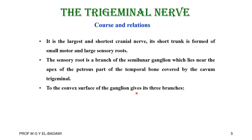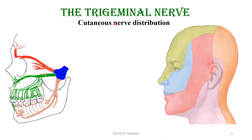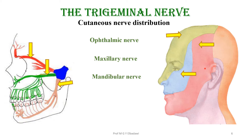The convex surface of the ganglion gives three branches: the ophthalmic, the maxillary, and the mandibular, which is joined by the motor root. For cutaneous distribution: the ophthalmic supplies the upper area of the face, the maxillary supplies the middle part, and the mandibular supplies the lower area. A line from the tragus to the outer angle of the eye and another to the outer angle of the mouth divides these regions. The auriculotemporal branch overlaps with the maxillary area.